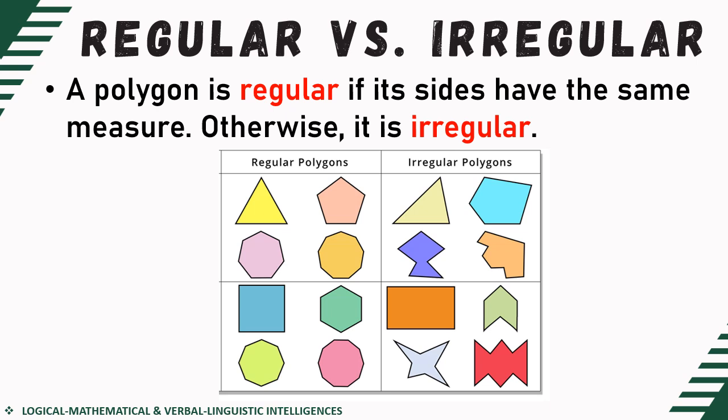For regular polygons, we have a three-sided polygon, a five-sided polygon, a six-sided polygon, and many more. For this three-sided polygon, let's say each side is three centimeters — three centimeters, three centimeters, and three centimeters. If all the sides have the same length, we can consider this as a regular polygon. Similarly, for the five-sided polygon, if all sides are, say, five inches, we will classify this as a regular polygon.